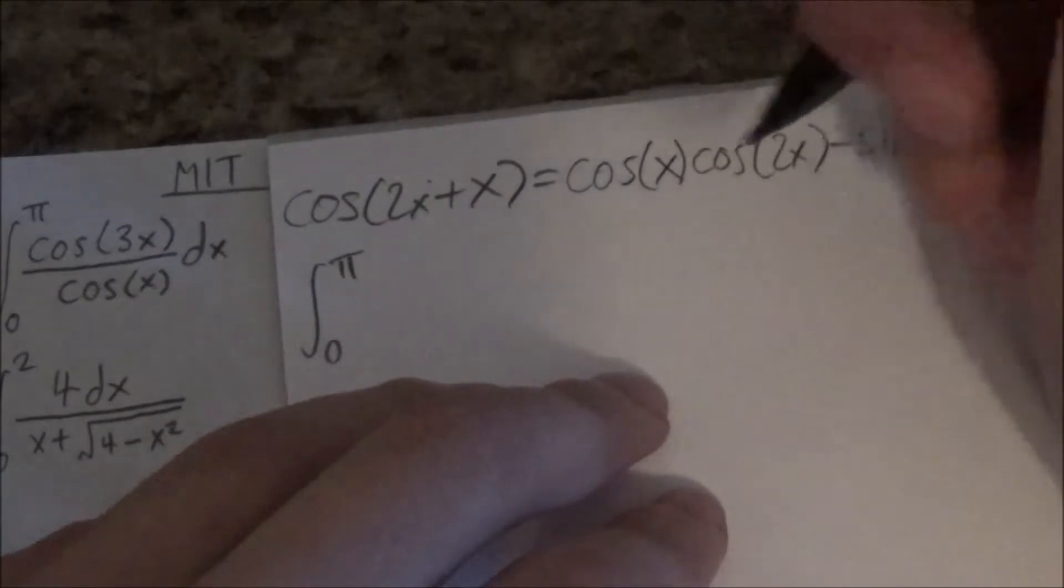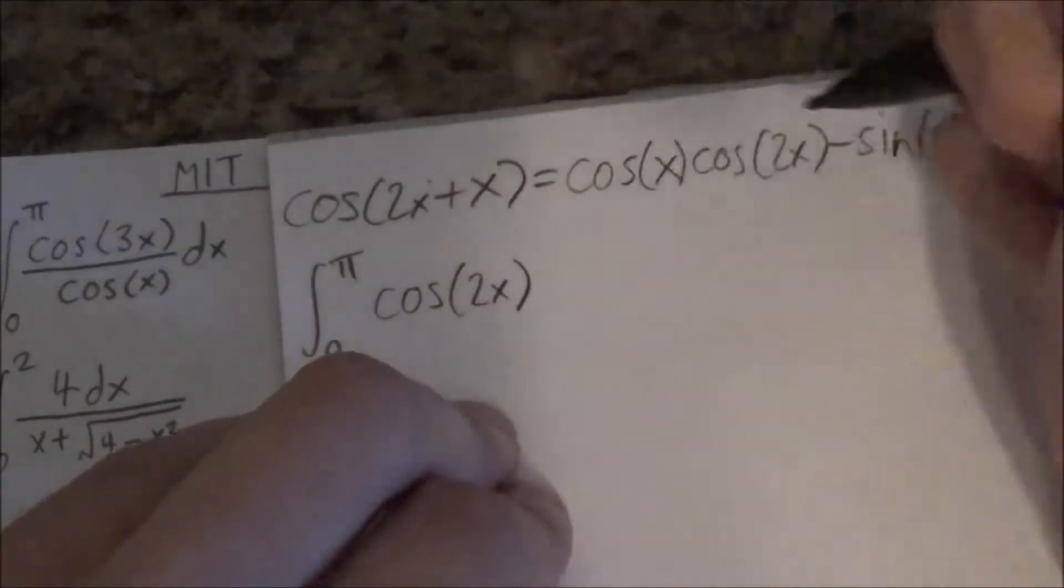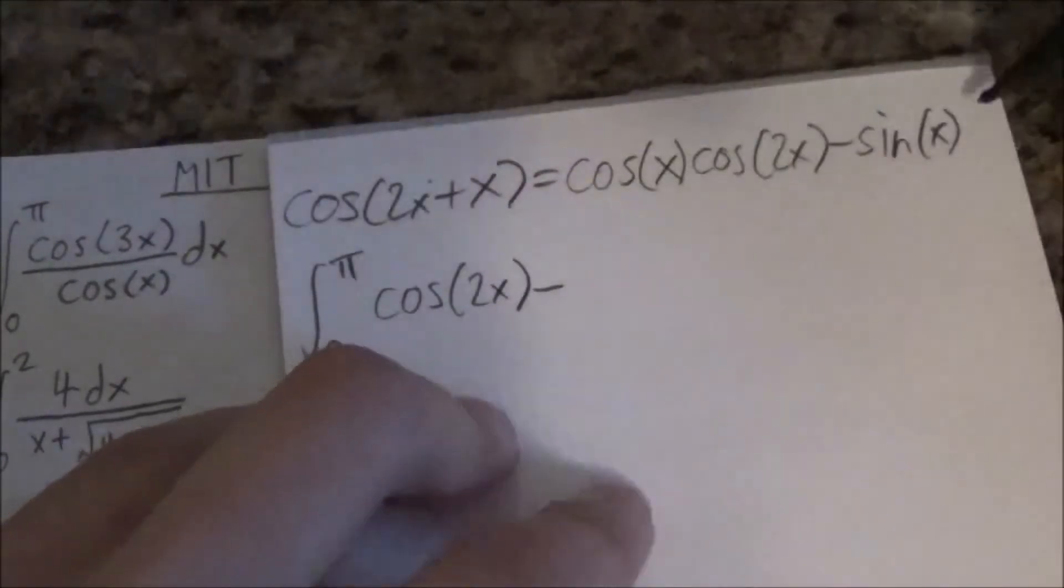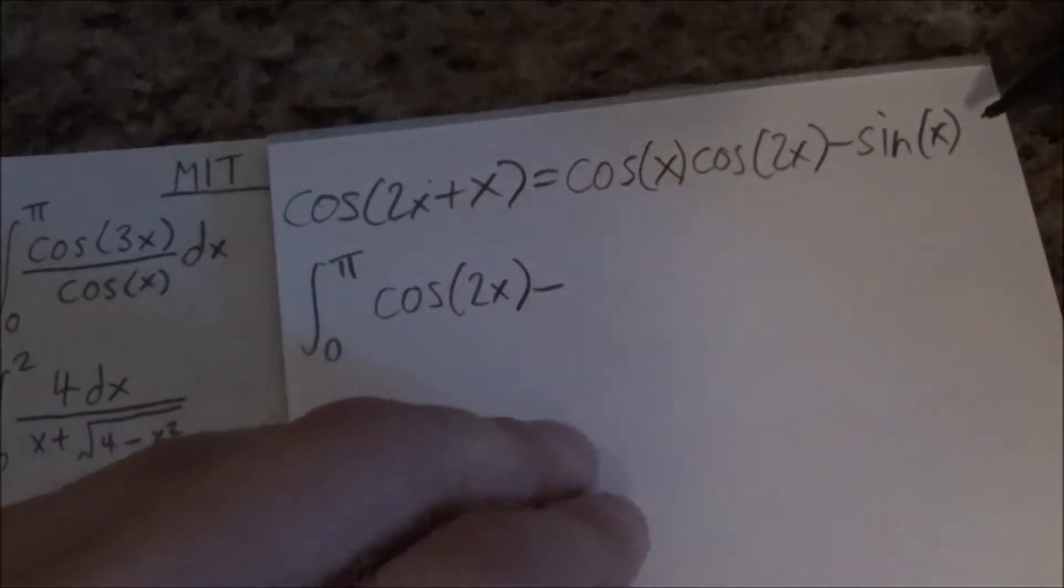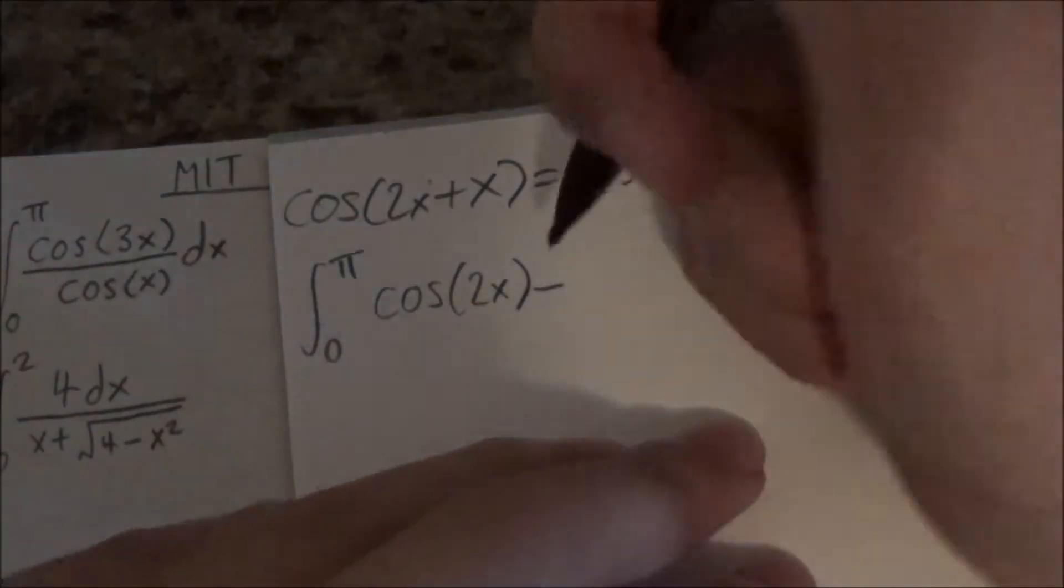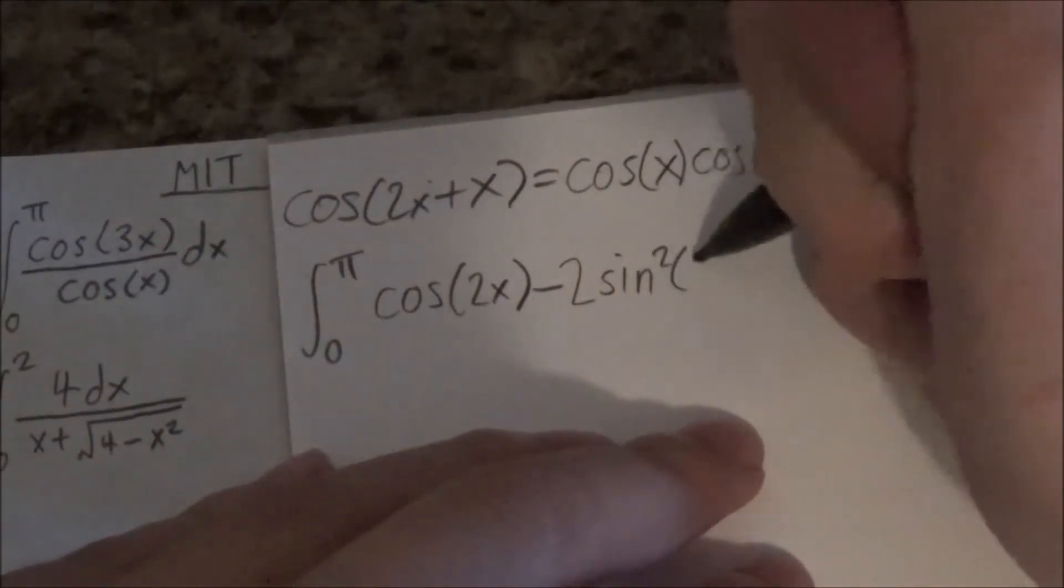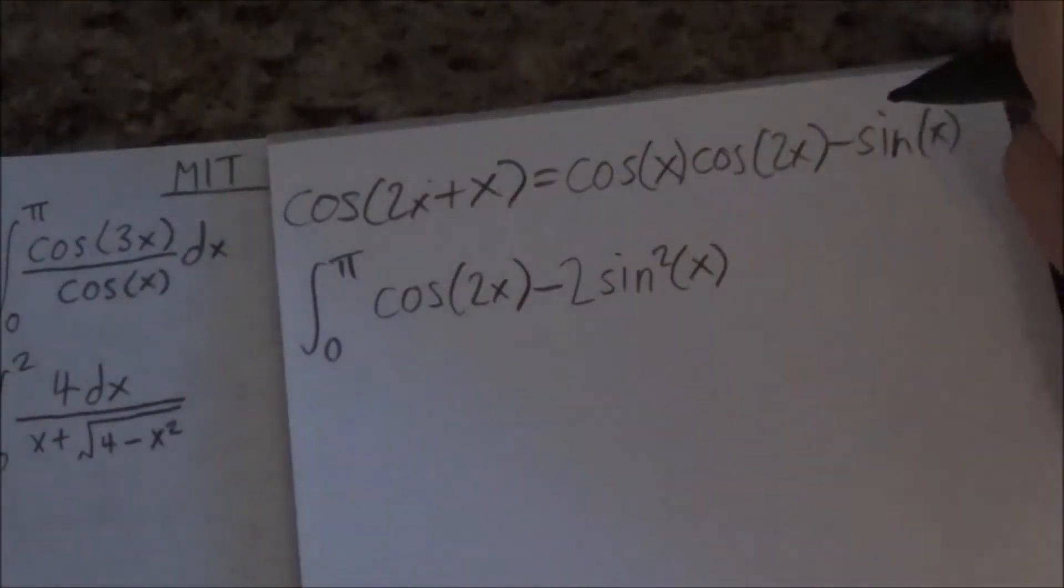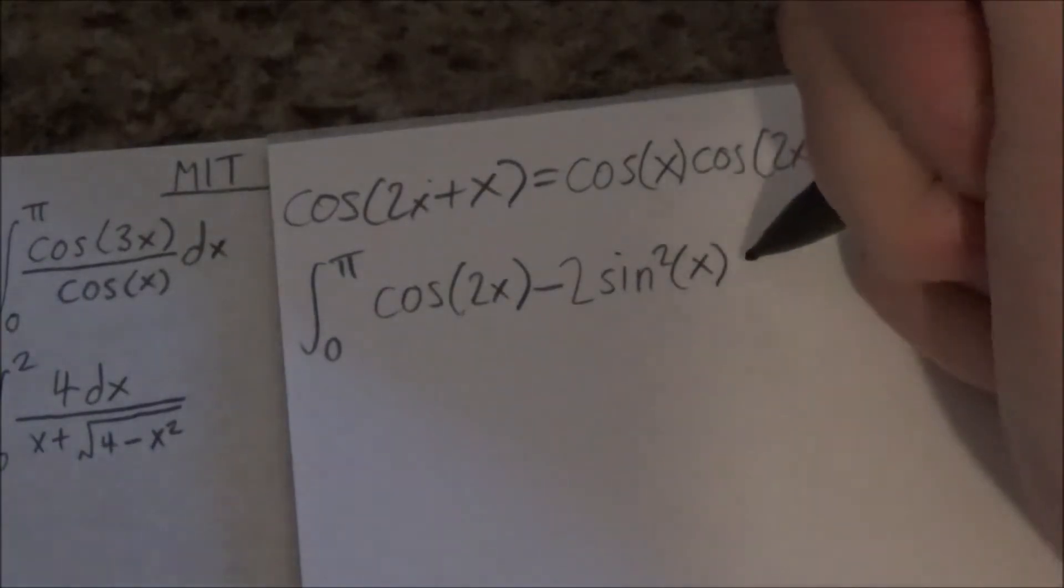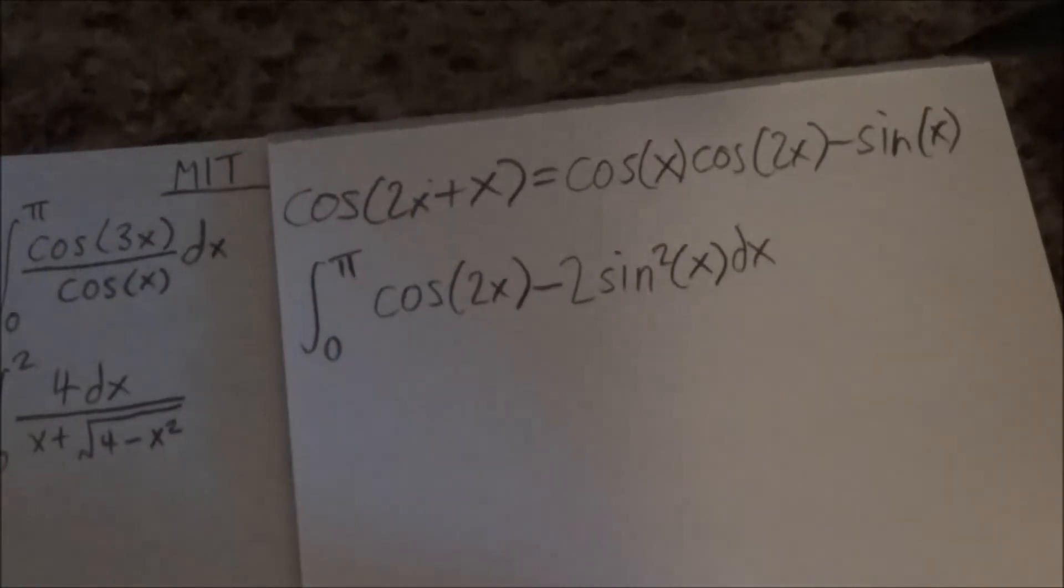This becomes cosine 2x. And then minus... Well, this is sine 2x. Sine 2x is 2 sine x cosine x. So I guess this is 2 sine squared x. Yeah? Mmkay. Oh god, it's one of these identities. Again.